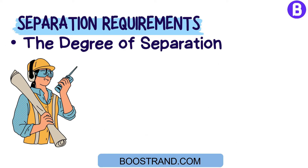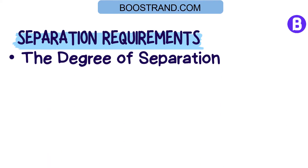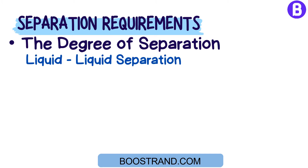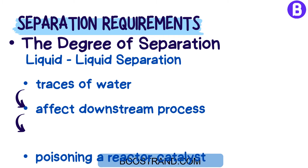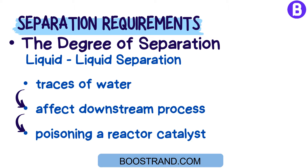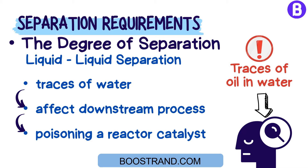A process engineer should understand what he needs from the separator, as this shall affect the sizing of the vessel, and shall issue a vessel datasheet to be purchased based on this sizing. The same applies in the case of liquid-liquid separation. For oil and water separation, traces of water may affect the downstream process, such as poisoning a reactor catalyst. On the other hand, traces of oil in water can be an environmental issue related to disposal, and based on the amount of oil, we shall need more complex systems so that the wastewater can reach the allowable disposal limits specified by environmental law.